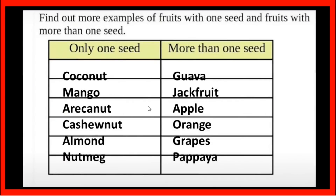Find out more examples of fruits with one seed and fruits with more than one seed. Fruits with only one seed include: coconut, mango, areca nut, cashew, almond, nutmeg. Fruits with many seeds include: jackfruit, apple, orange, grapes, papaya.